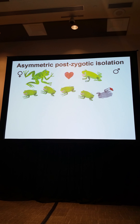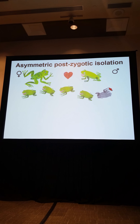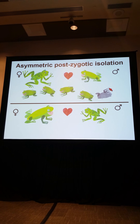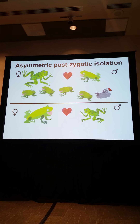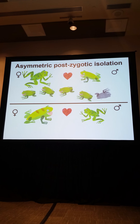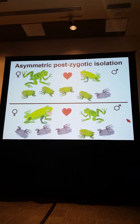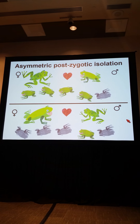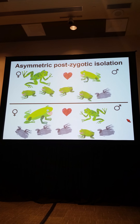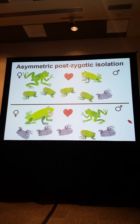Since there is partial reproductive isolation, we might see something like 20% hybrid inviability in one cross direction. But when we do this cross in the opposite direction — female from one species, male from the other — we often see a difference in the strength of reproductive isolation, for example 80% hybrid inviability. This is the asymmetric pattern.